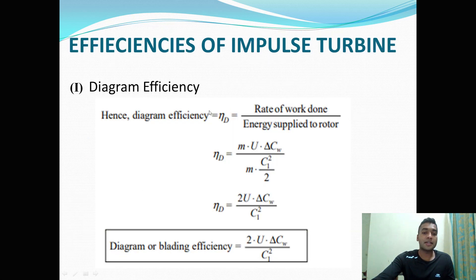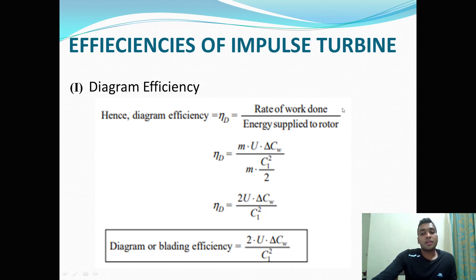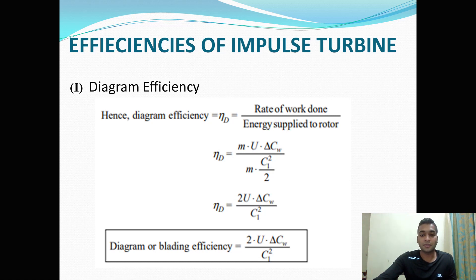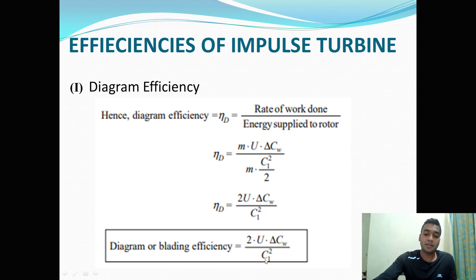Let us understand the first efficiency, that is diagram efficiency. It is a ratio of rate of work done divided by energy supplied to the rotor. Rate of work done is obtained from driving thrust, and driving thrust is obtained from your rate of change of momentum. Energy supplied to the rotor is the kinetic energy of steam coming from the nozzle and imparting on your moving blades. The final formula for diagram efficiency is 2 multiplied by U (blade velocity) multiplied by delta CW, divided by C1 squared.